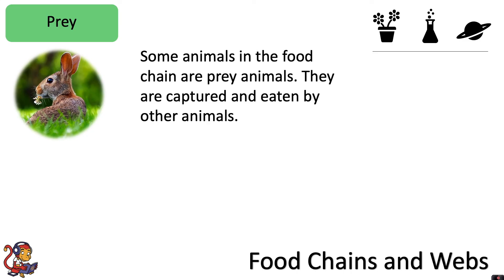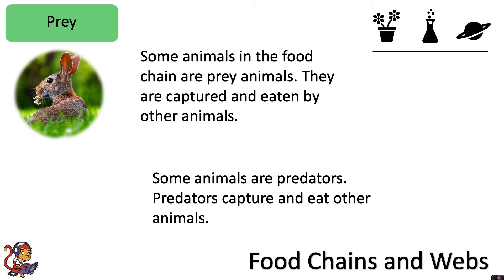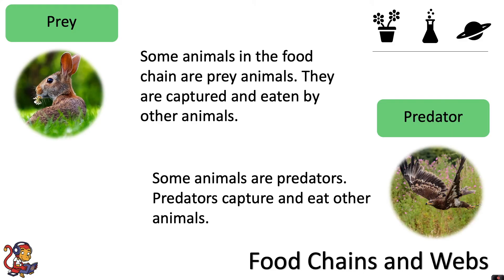Some animals in the food chain are prey animals — they are captured and eaten by other animals. For example, the rabbit is a prey organism. And some animals are predators — they capture and eat other animals. For example, the eagle is a predator.